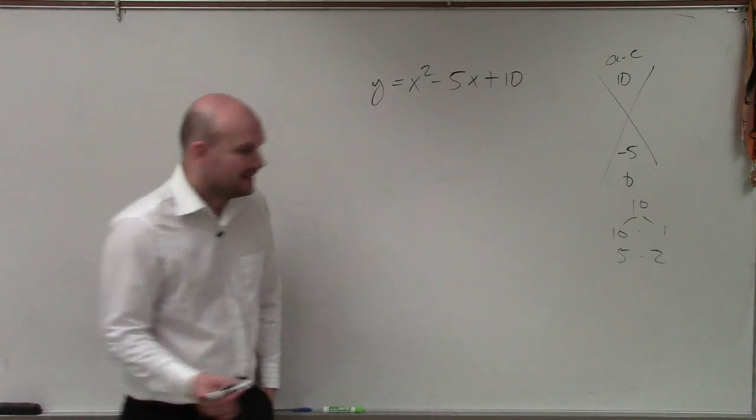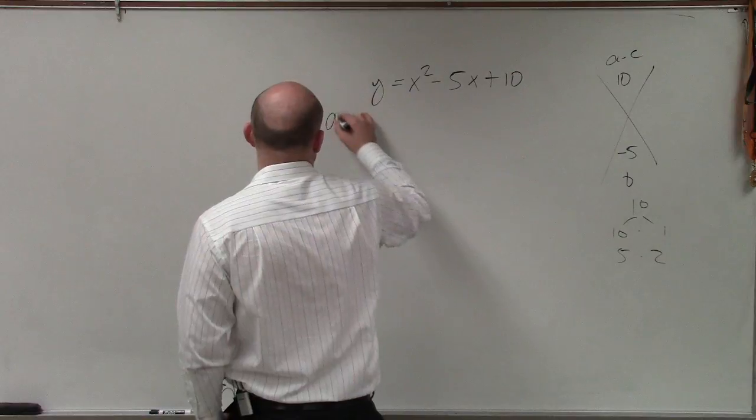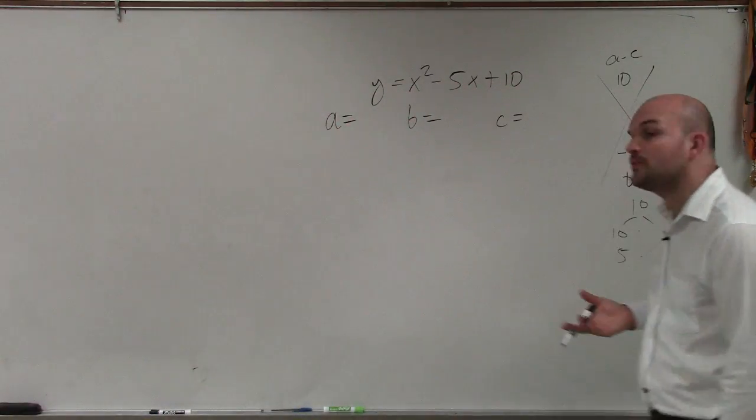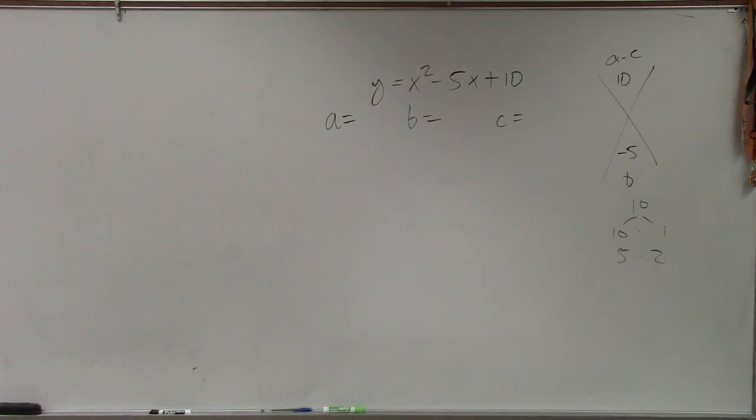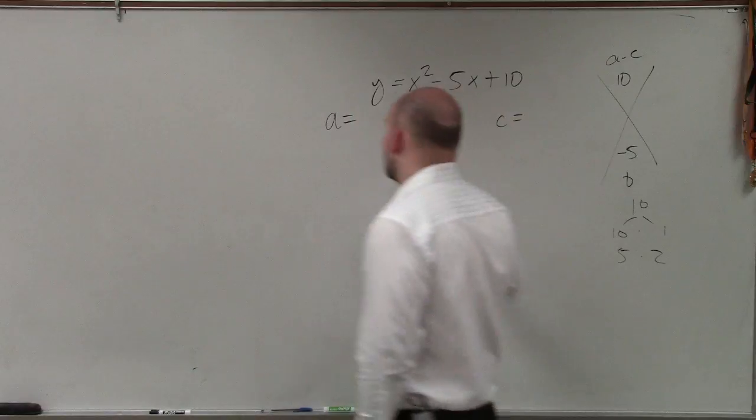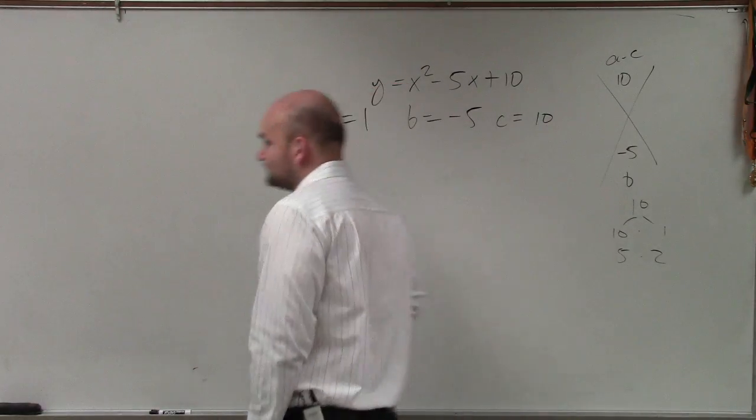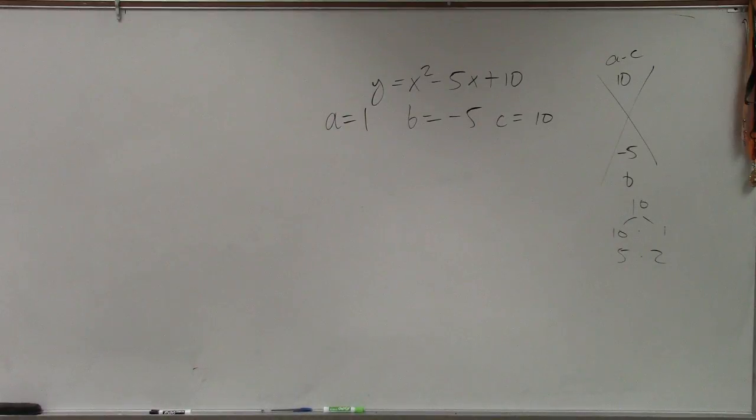So what we're going to do for that is a couple steps. First step is we need to identify a, b, and c. And when you guys are doing your work, I want you to do it just like I'm doing right up here. I want you to say a equals this, b equals that, and c equals this. So you're going to write out a, b, and c. And then you're going to plug in what those values are: 1, negative 5, and 10.